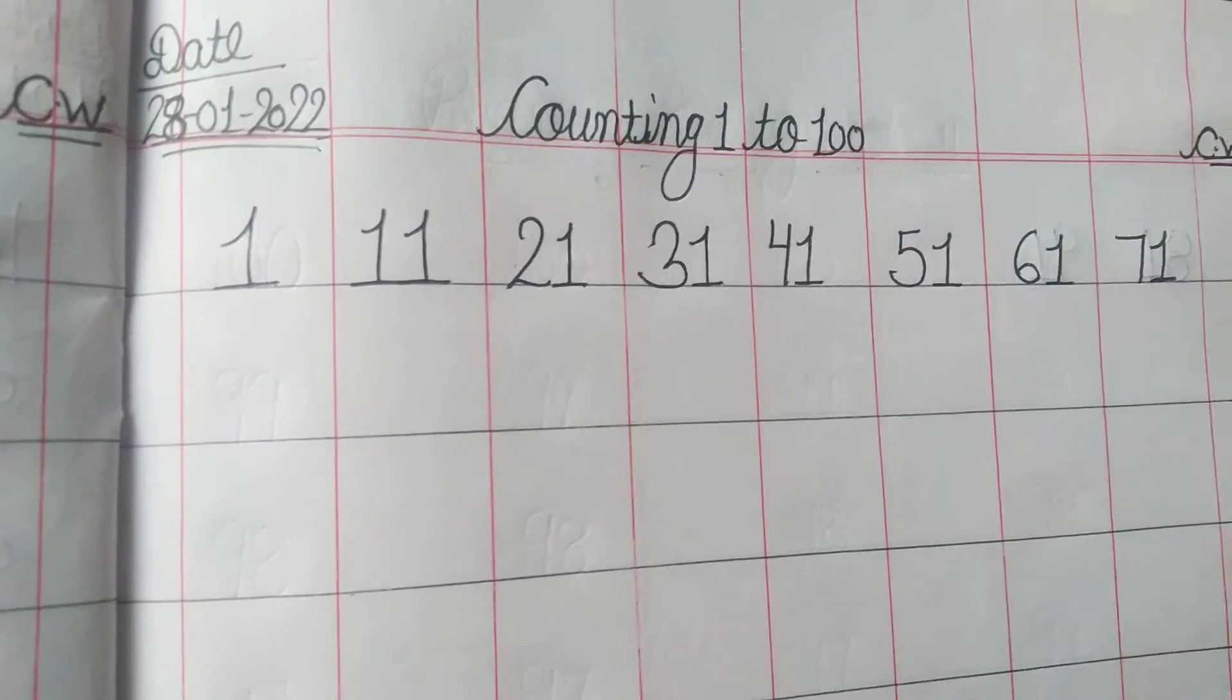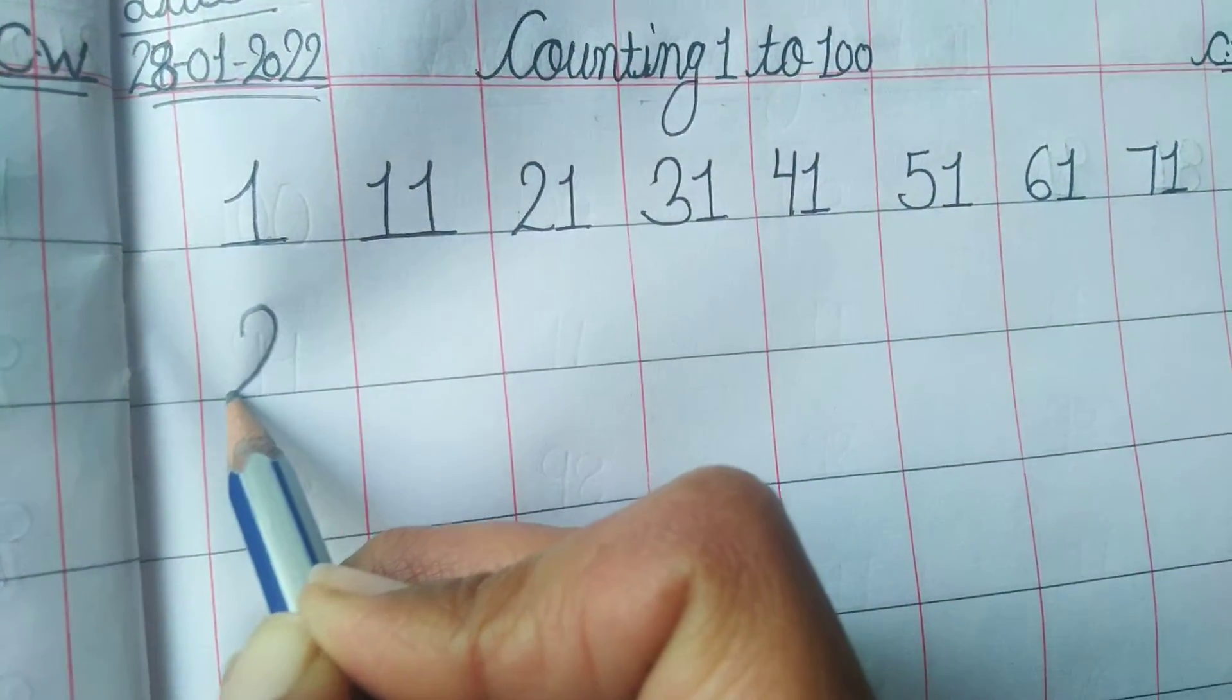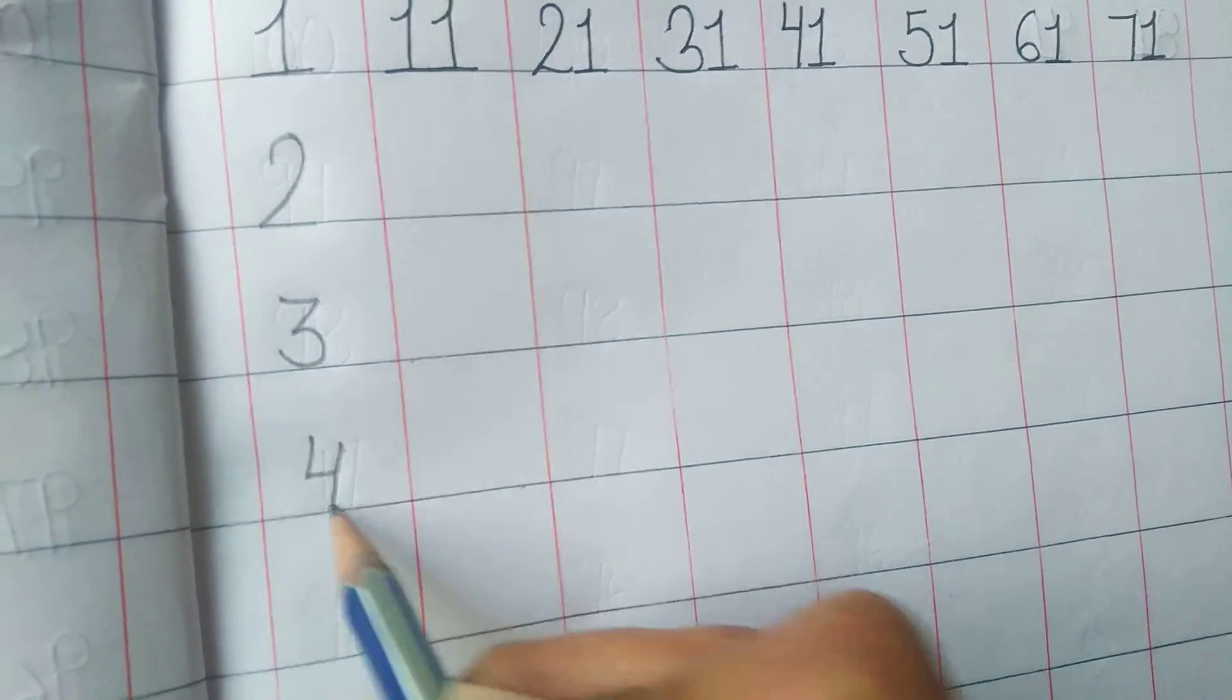So now let's begin. 1, 2, 3, 4, 5, 6, 7, 8, 9, 1, 0, 10.